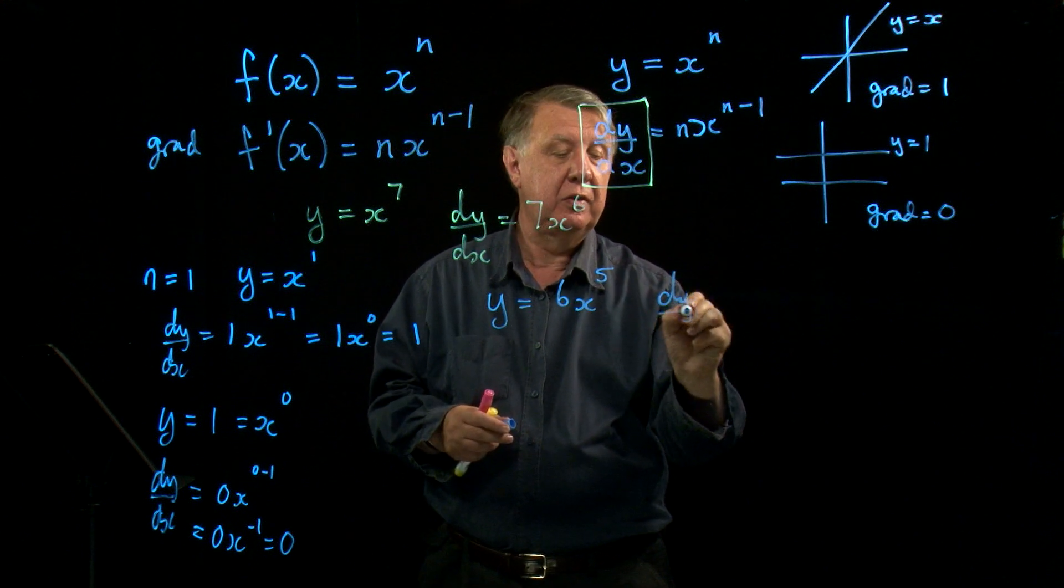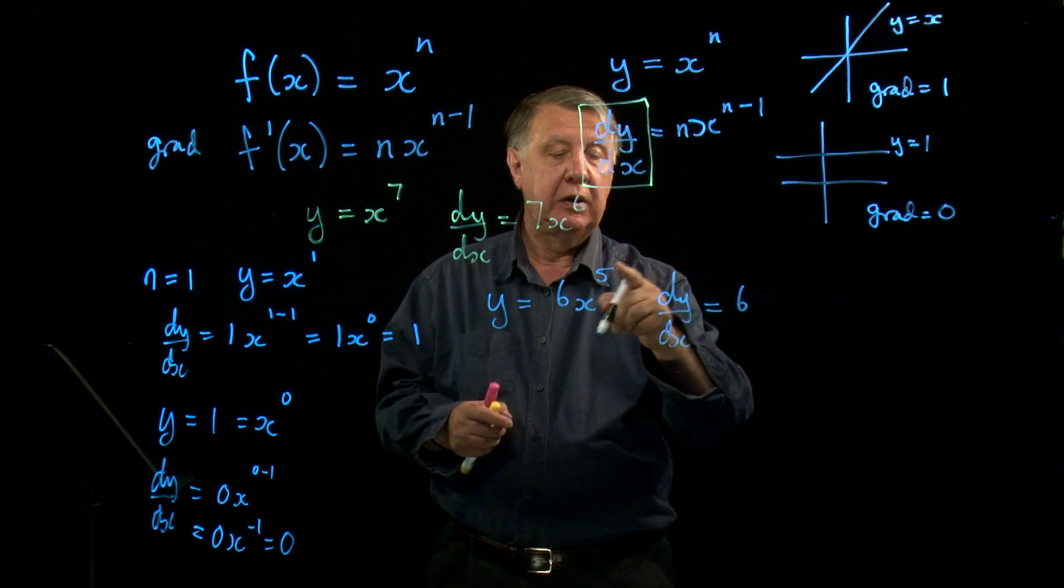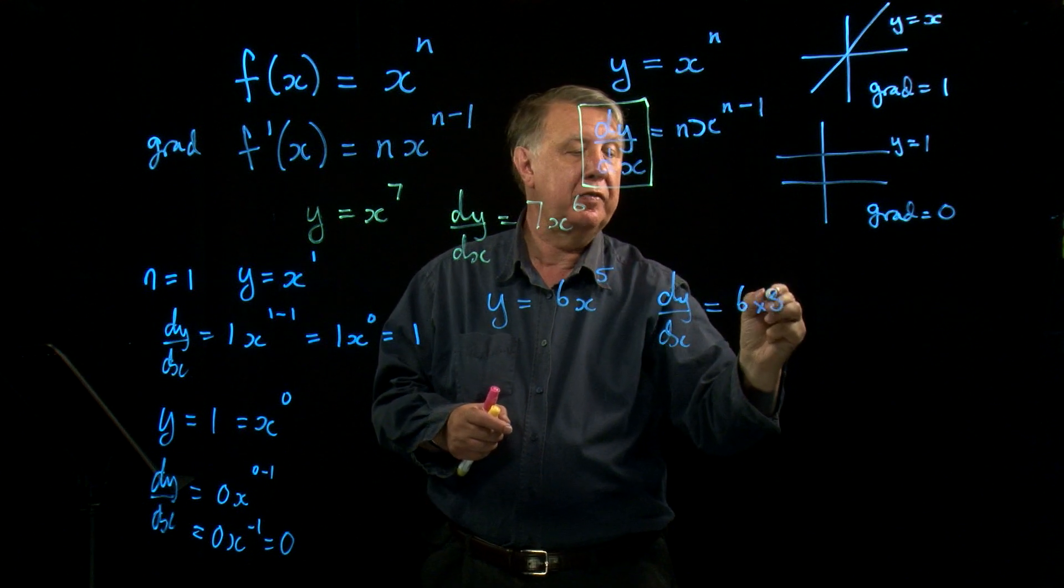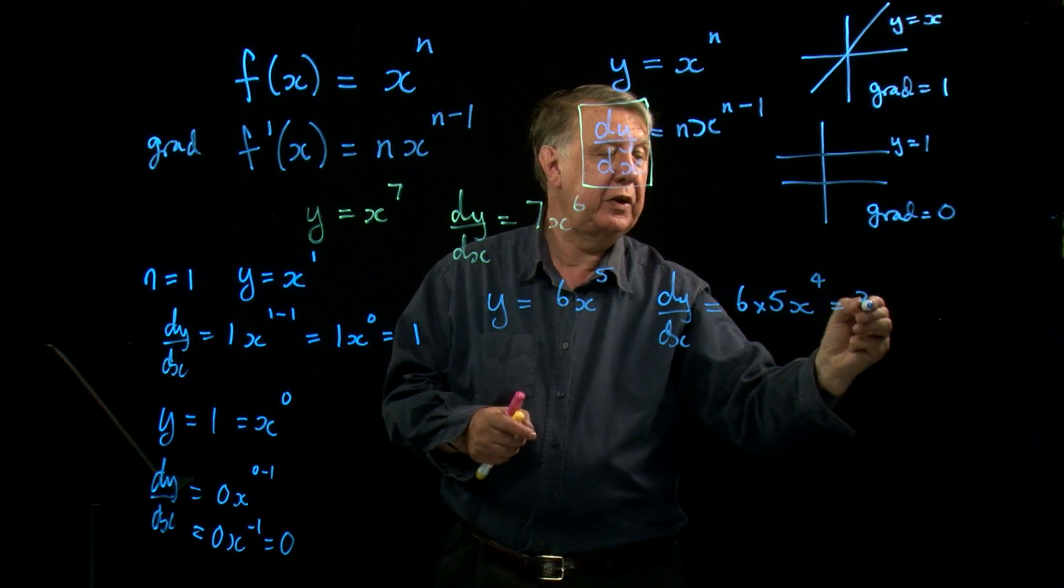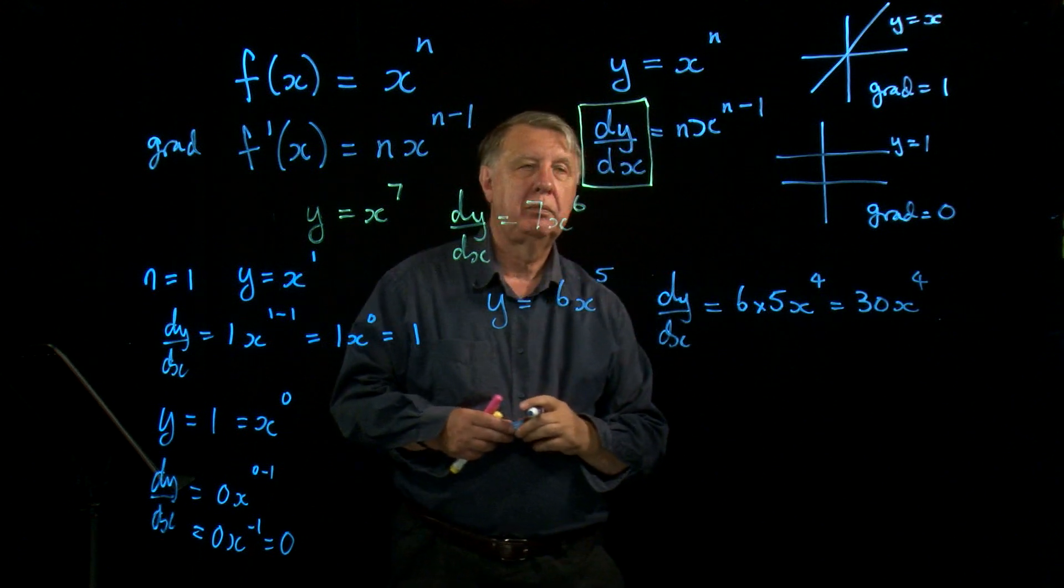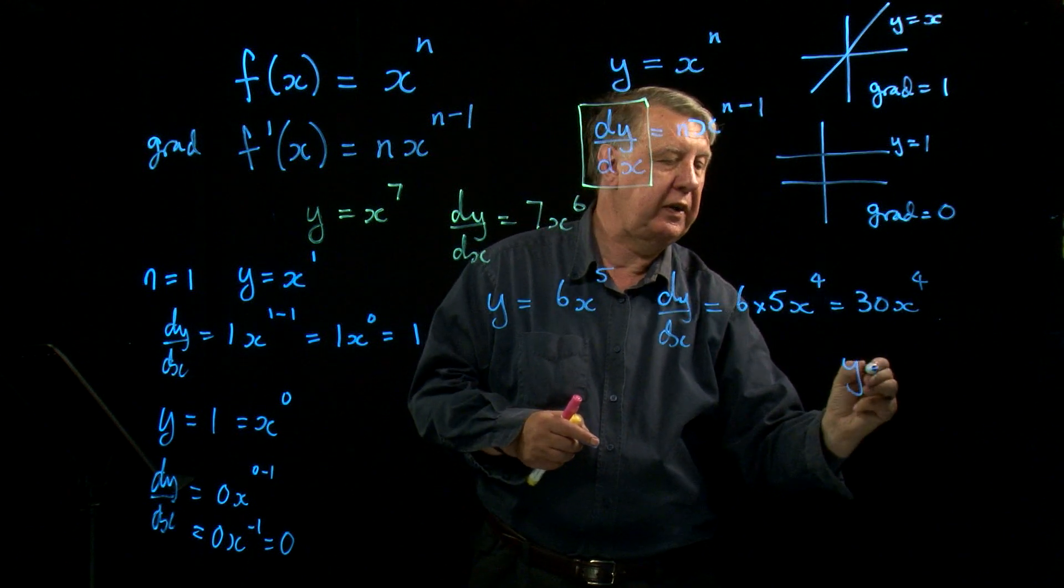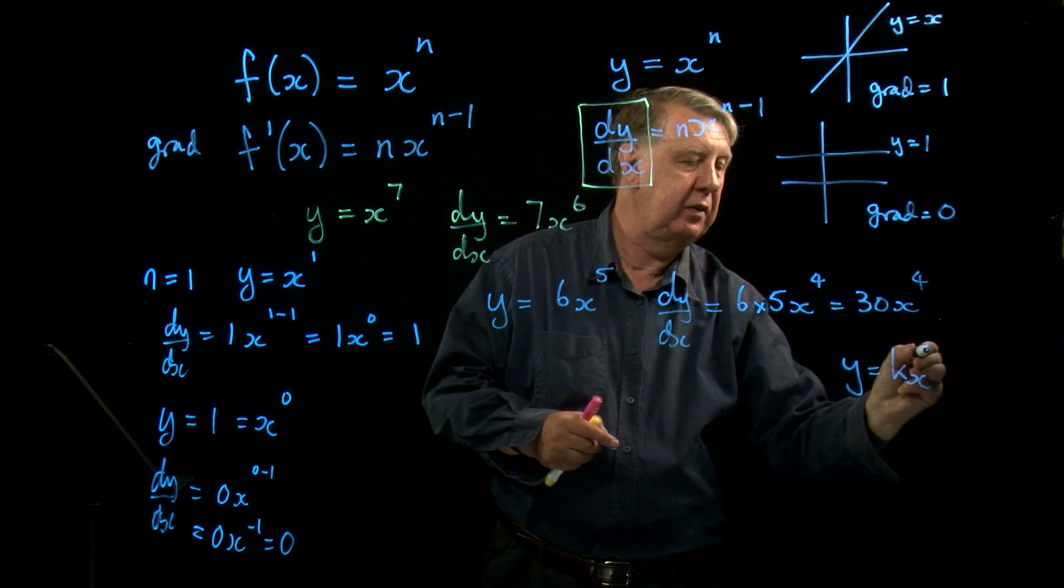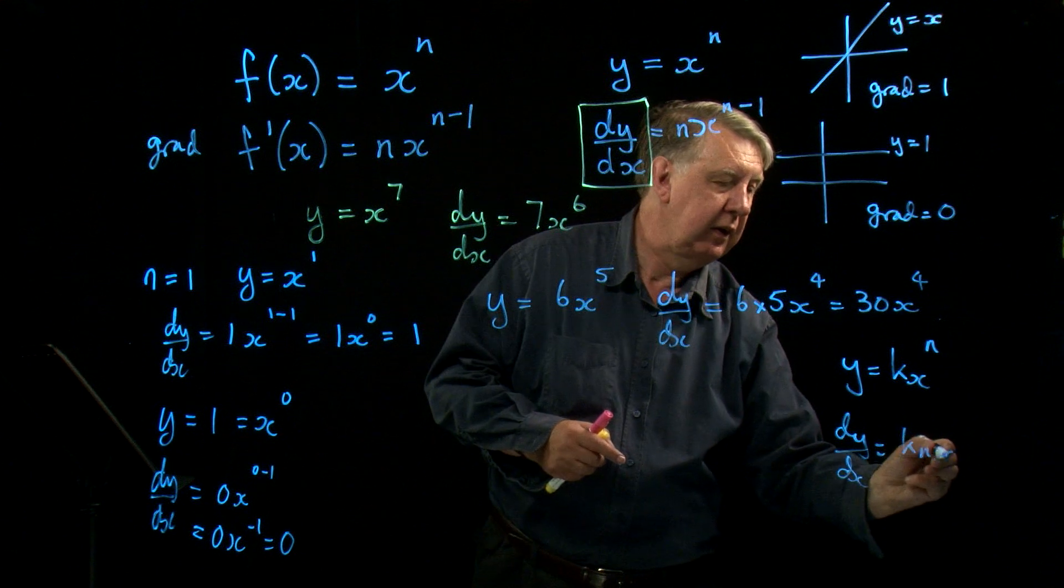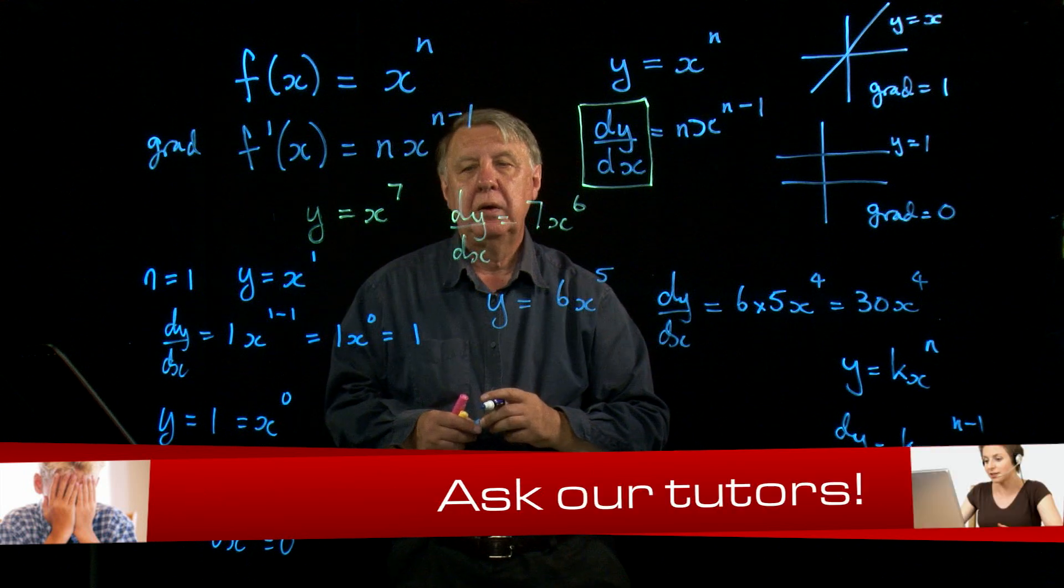So dy by dx equals, the 6 stays there for the moment, and I'm worried about x to the 5. x to the 5 is 5x to the 4, gives me 30x to the 4. So my rule then changes. If y is k times x to the n, dy by dx equals knx to the n minus 1.